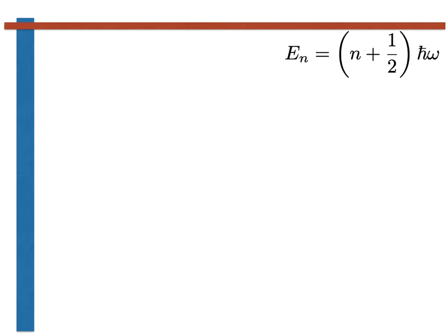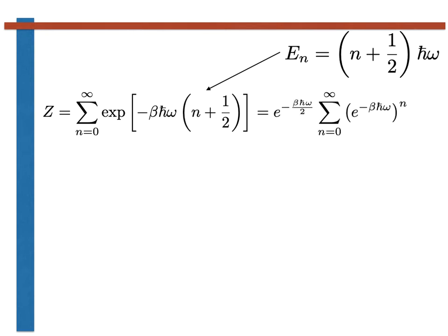To calculate a partition function from this expression for the energy levels we have to evaluate a sum and not an integral. The particular sum we need to compute is the following. We can immediately see that we can rearrange this expression by using the laws of exponential and by taking terms that do not depend on n outside of the sum. When we do this we find the expression that is shown here.